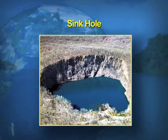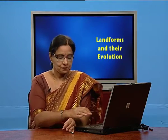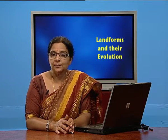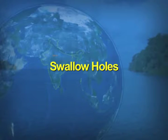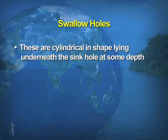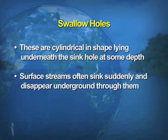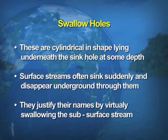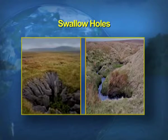In these depressions, rivers disappear while moving through the area. Swallow holes are cylindrical in shape, lying underneath the sinkhole at the same depth. Surface streams often sink suddenly and disappear underground through them, justifying their name by virtually swallowing the subsurface streams.